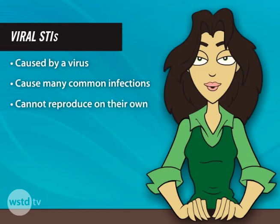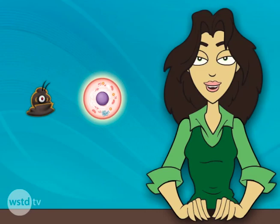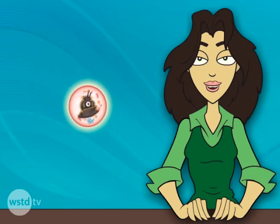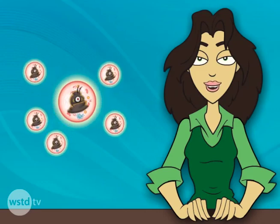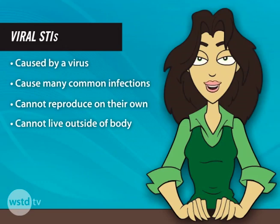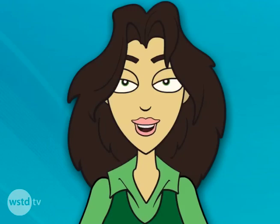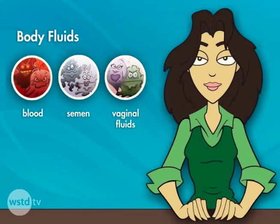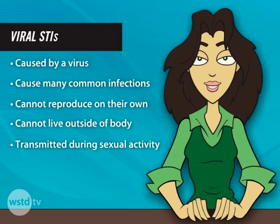Unlike bacteria, viruses cannot reproduce on their own. Instead, they hijack host cells — they take control and use your body cells to do their dirty work. Unlike parasites, viruses cannot crawl about and hang out on objects outside the body because they have to remain on a host cell to stay alive. But as long as they have a host cell to travel with, viruses can move from place to place and person to person. So if body fluid like blood, semen, or vaginal fluid is passed from one person to another, such as in sexual contact — whammo! The virus can make its move.